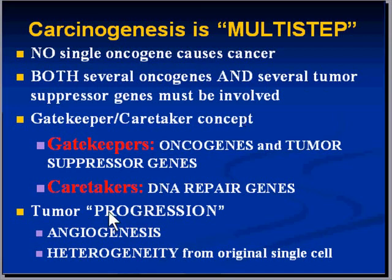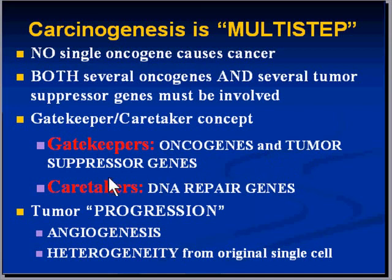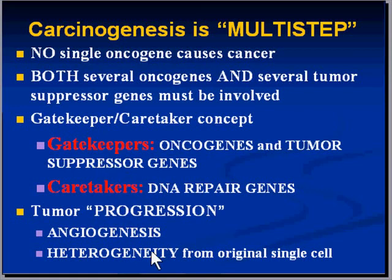You might also remember the gatekeeper/caretaker concept. Gatekeepers are genes — and ultimately their products — which are involved in the process of tumors developing: oncogenes and tumor suppressor genes. Caretakers, on the other hand, are genes involved in DNA repair. So here you have genes which are letting in the cancer, and here are genes which are involved in checking things to make sure cancer doesn't develop. If you want to think of that as a dual concept, you certainly can.